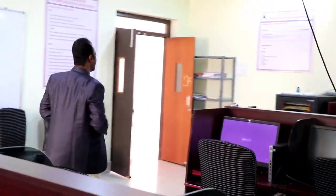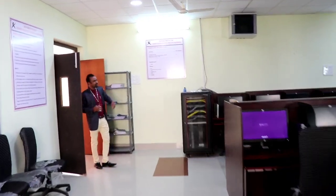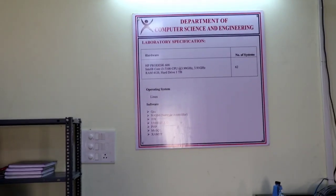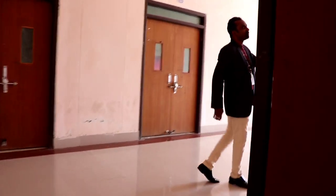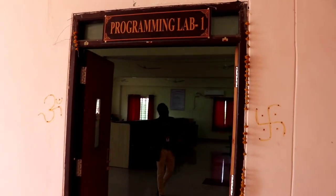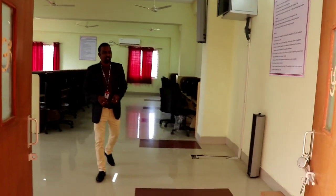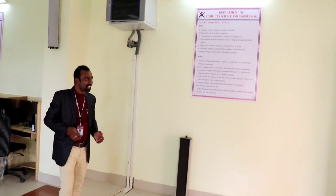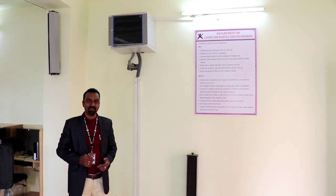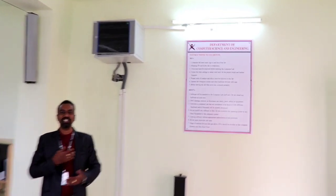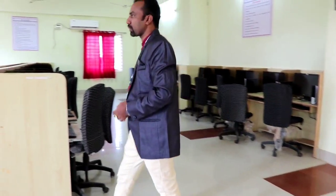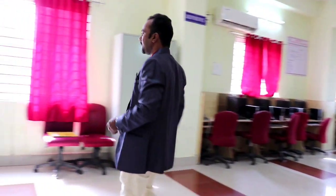Let's enter into the other lab which is just beside it. This is the system configuration with hardware and operating system — we use Linux and other software. This is the other lab we are providing. We request all students to follow lab instructions regarding dress code, ID card, lab record, and observation book. Faculty evaluation is done in every lab session, and academics are monitored. We will also show you some sample records as part of student work. This is the type of records students maintain.